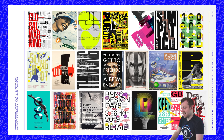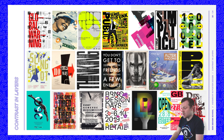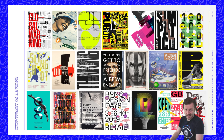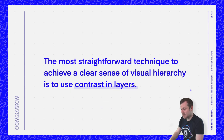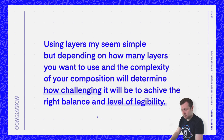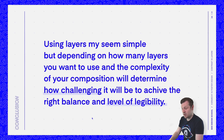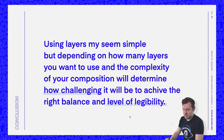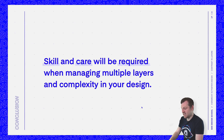Overall, in each example, it's clear to see how hierarchy has been achieved. In almost every example, your eye is drawn to the visual element that appears closest to us, or the element set on the highest layer. In conclusion, the most straightforward technique to achieve a clear sense of visual hierarchy is to use contrast in layers. Using layers may seem simple, but depending on how many layers you want to use and the complexity of your composition will determine how challenging it will be to achieve the right balance and level of legibility. Skill and care will be required when managing multiple layers and complexity in your design.